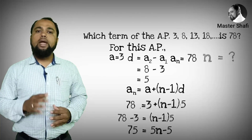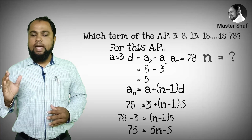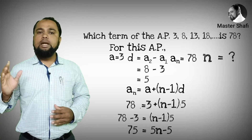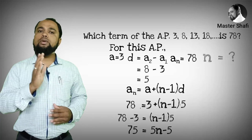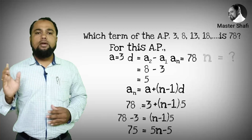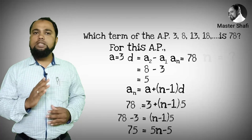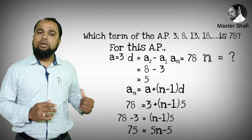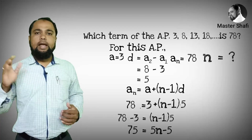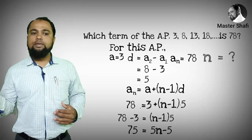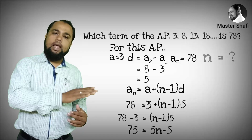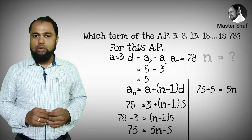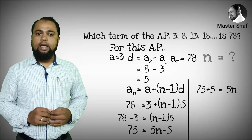Multiplying the terms: 5 into n is 5n, and 5 into minus 1 is minus 5. Now taking minus 5 to the left-hand side, it becomes 75 plus 5, which equals 80. So 80 is equal to 5n.